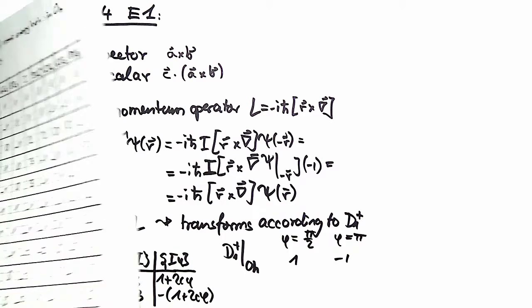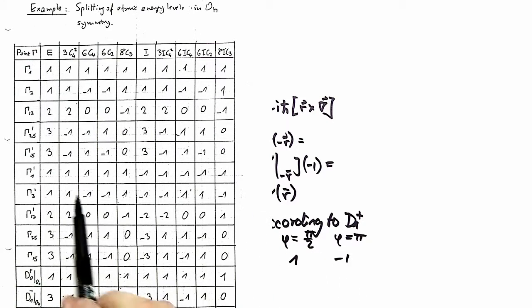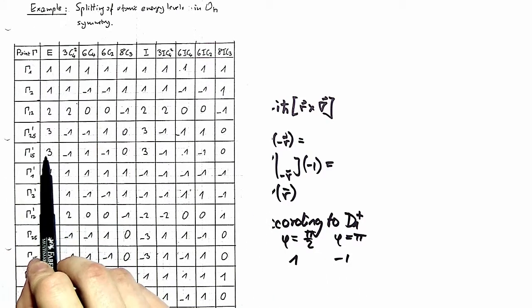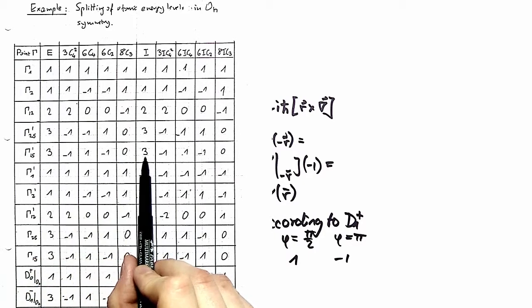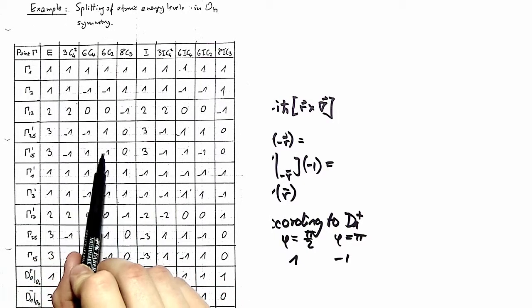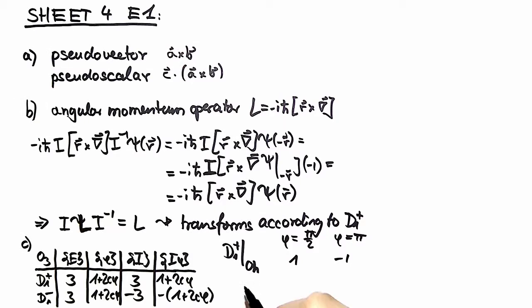We look on page 99 of our lecture notes and see that the representation gamma 1 5 prime is of dimensionality 3, doesn't change sign upon inversion, and has character 1 and minus 1 for pi half and rotations of pi. So we can conclude that D1 plus restricted to OH yields the irreducible representation gamma 1 5 prime of OH.